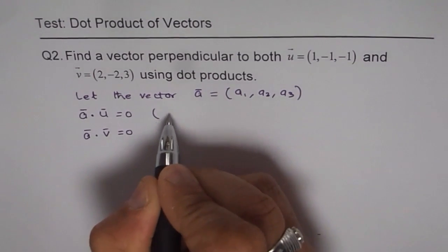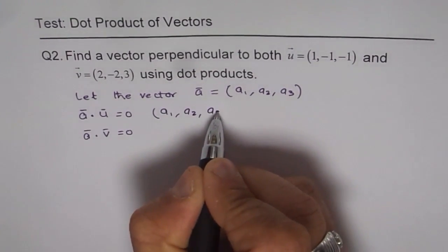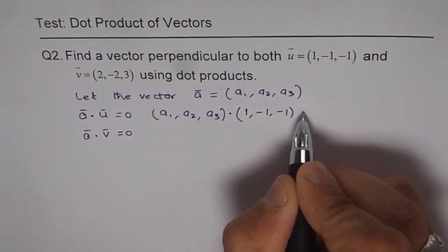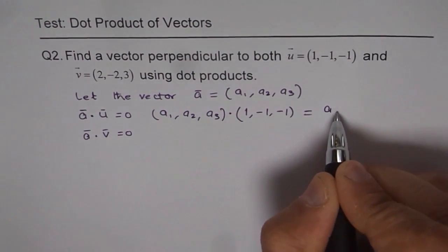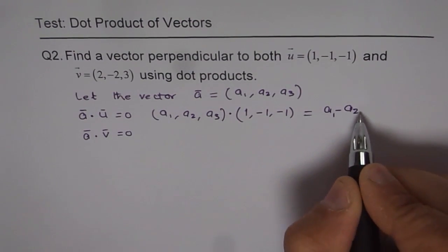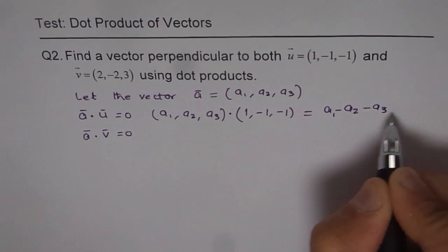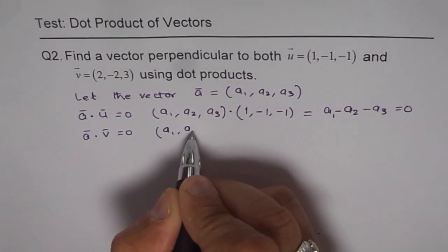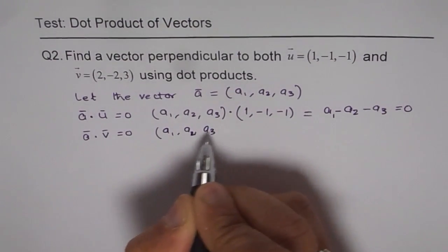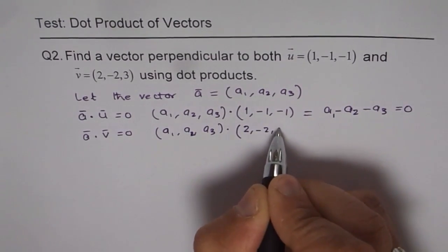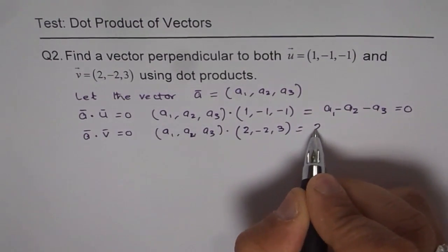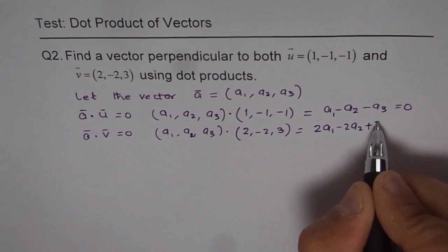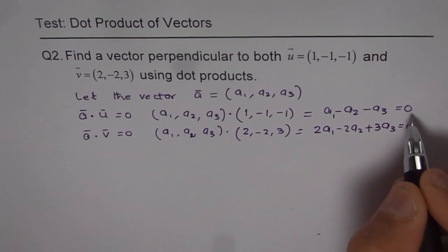From the first equation, we get a1 minus a2 minus a3 equals zero. From the second one, we get a1 minus 2a2 plus 3a3 equals zero. So that becomes our second equation.